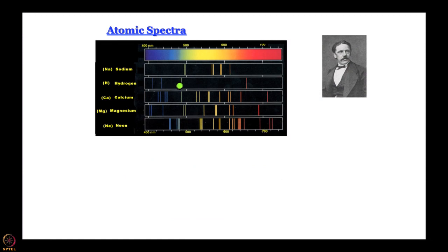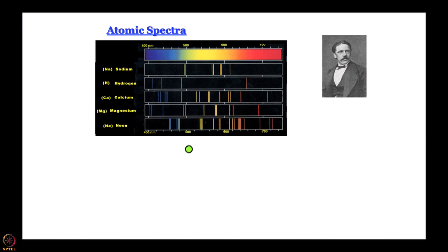This is how spectra would look like in that arrangement. The color has been added to help us understand the color more realistically, but actually these are all black and white photographs. The x-axis is your wavelength and wherever we see a line, that is the energy or wavelength corresponding to which emission has taken place. Now, if the Rutherford model was correct then what we should see is a continuum, but depending on which atom you look at, you see lines - and in fact you see some series of lines.